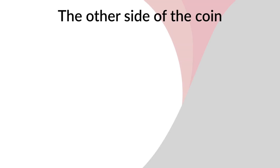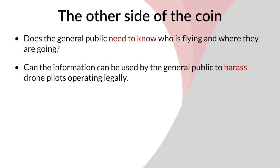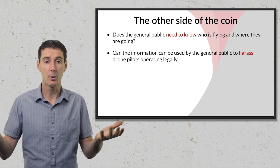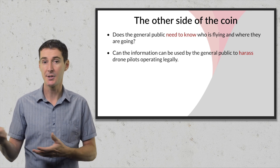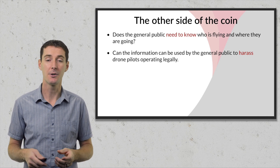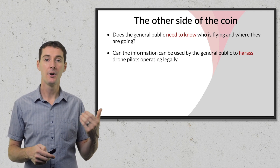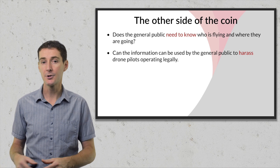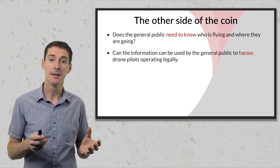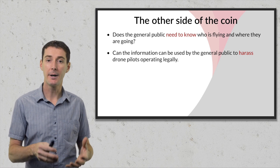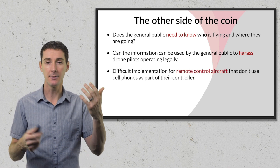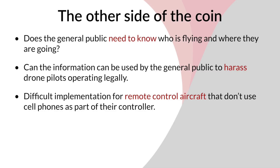On the flip side, there are counter-arguments. The first: does the general public really need to know who's flying and where? If you see an airplane in the sky, do you question where it's going? If you see a car in your neighborhood, do you need to know who's driving it and where they're headed? Could giving the general public access to that information lead to more harassment of pilots who are actually following the rules and operating safely and legally?